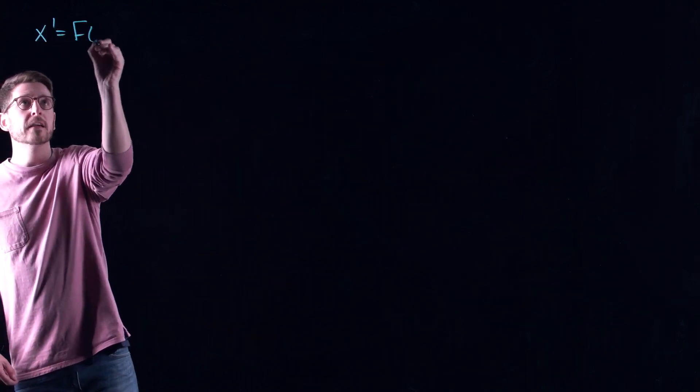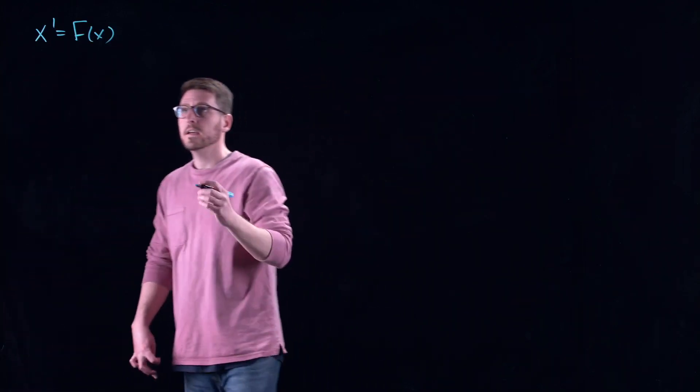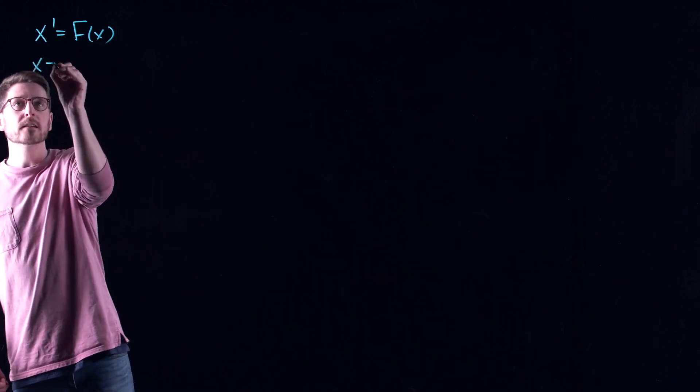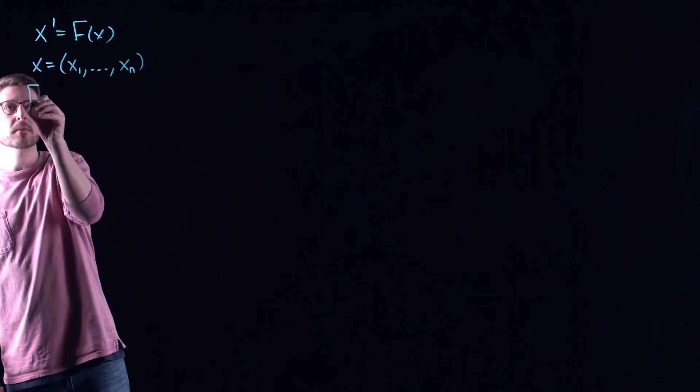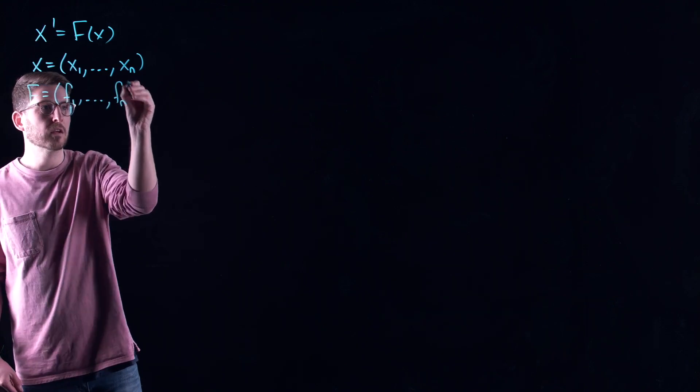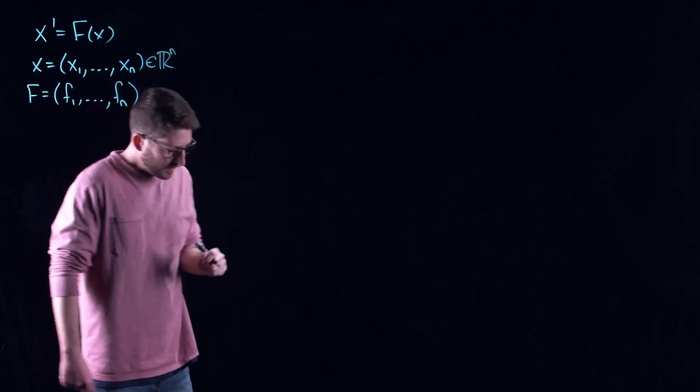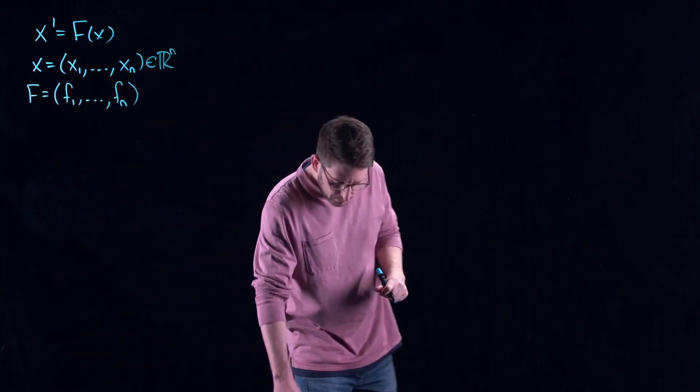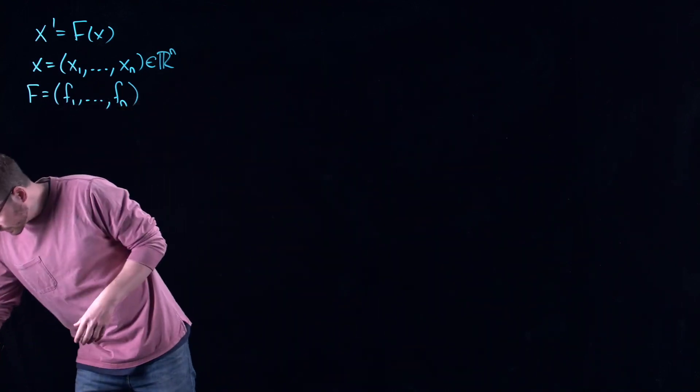This is called Euler's method. It is a very simple method for approximating solutions to differential equations. And the way it does it is it turns a continuous time dynamical system into a discrete time dynamical system. Here's the basic idea. I have a continuous time dynamical system x' is equal to f of x.